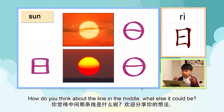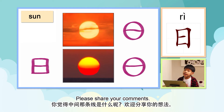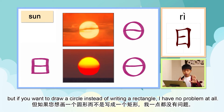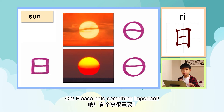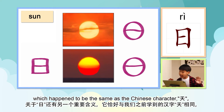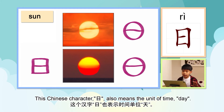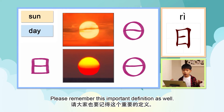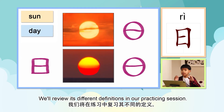How do you think about the line in the middle? What else could it be? Please share your comments. Anyhow, this character evolved from a circle to a rectangle. Please note something important — there is another important meaning about 日, which happens to be the same as the Chinese character 天 that we've learned before. This Chinese character 日 also means the unit of time: day. Please remember this important definition as well.